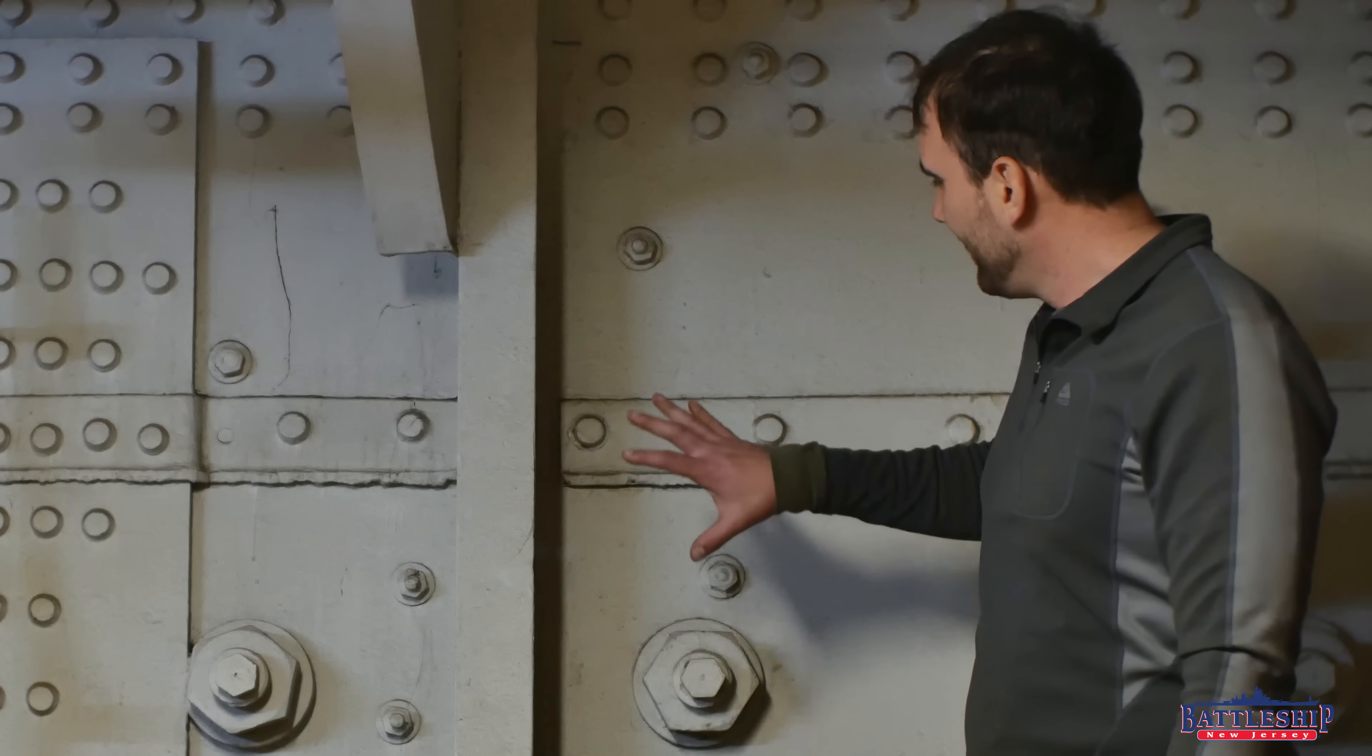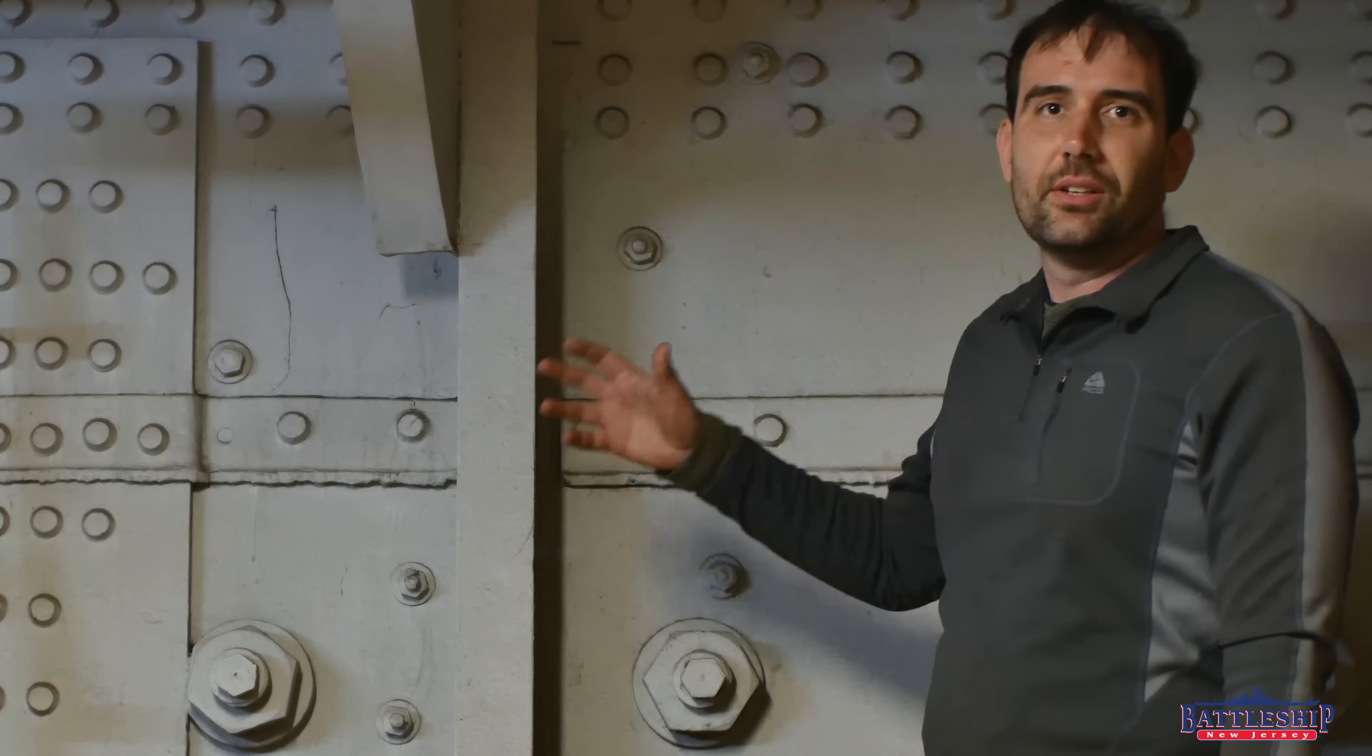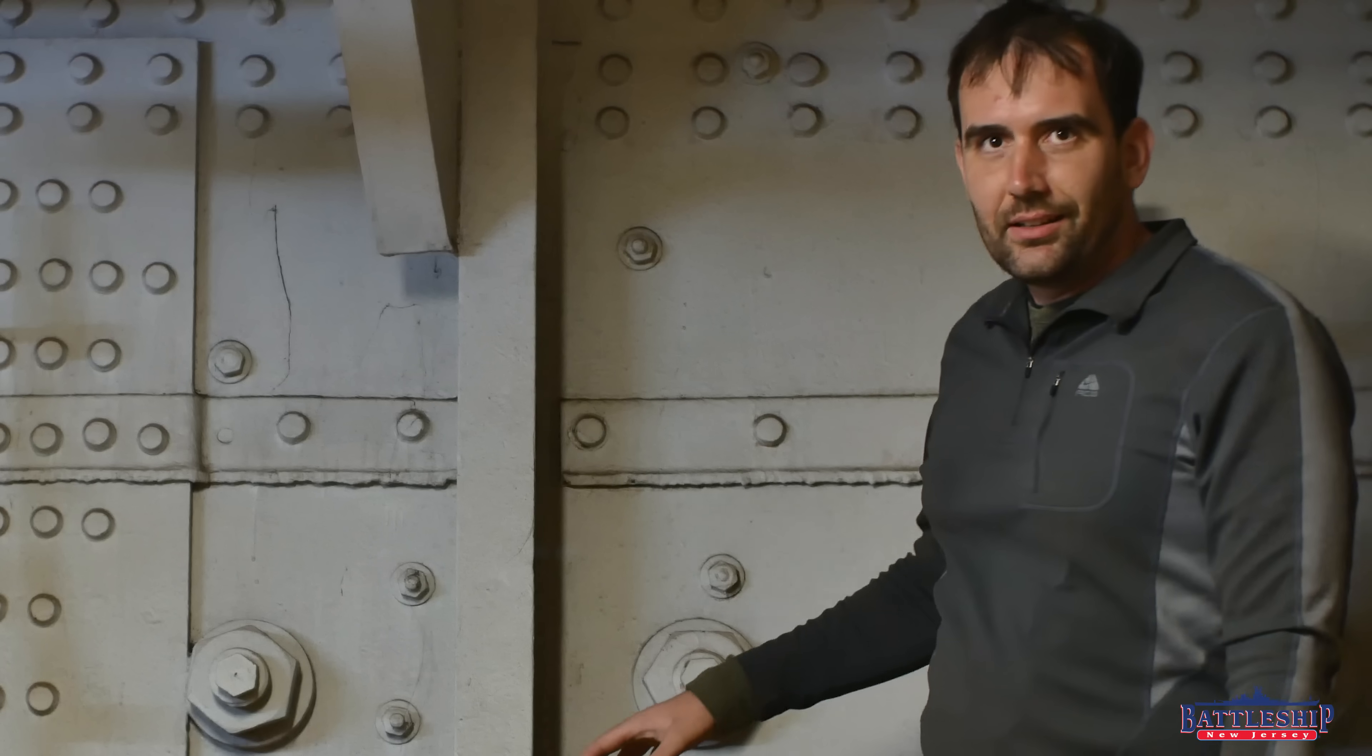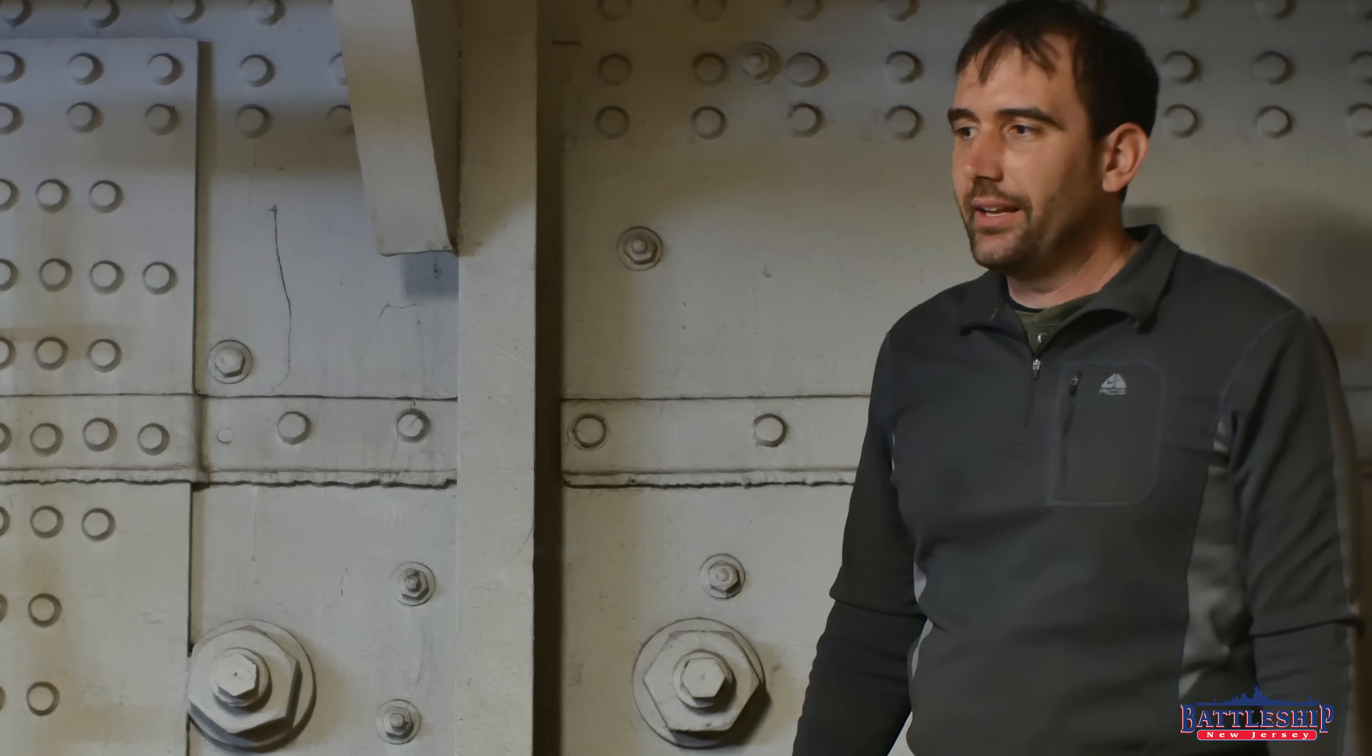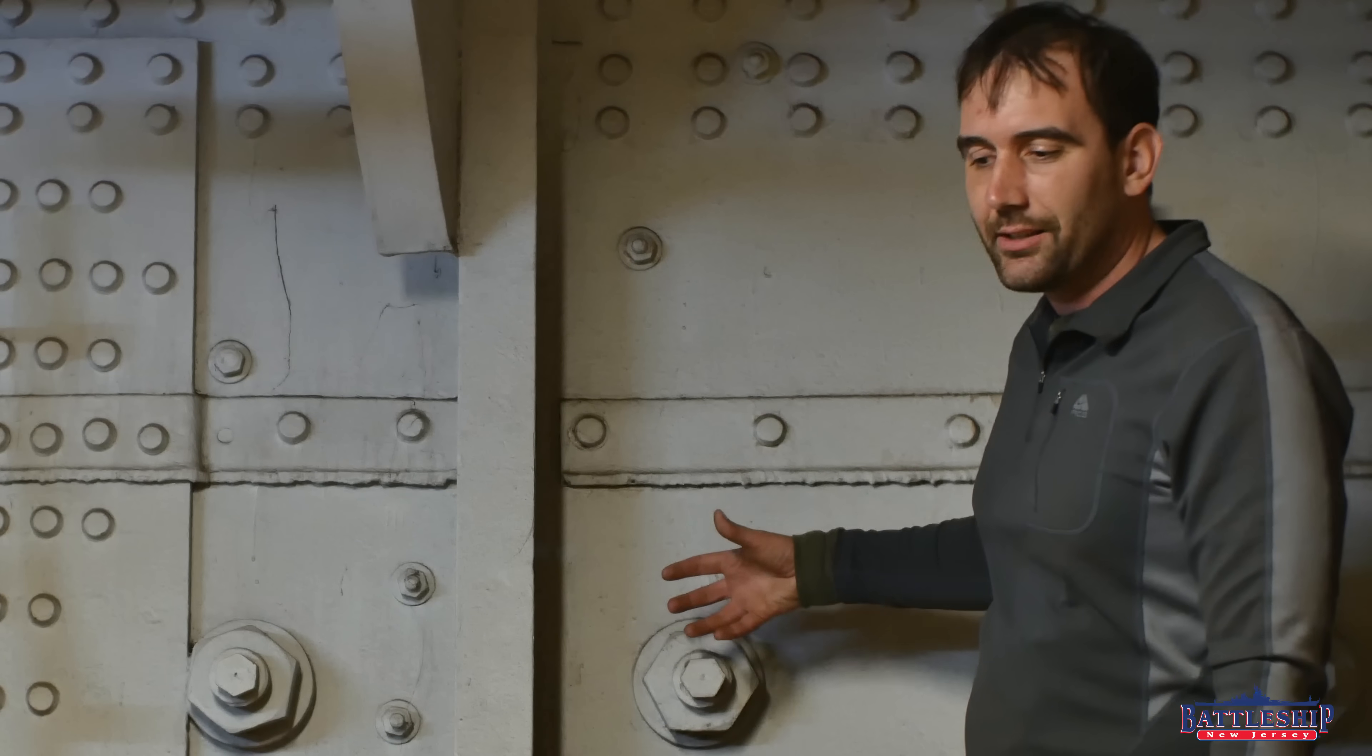So these nuts right here are what are holding the armored belt onto the ship. So this is the backing plate right here. Notice all of the riveting, which is significantly more than you see on later battleships where New Jersey has a considerable amount of welding. And then you can see the nuts that are holding the armored belt to this backing plate.